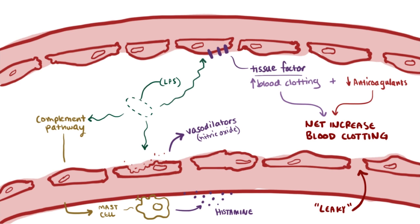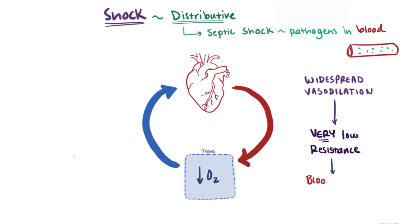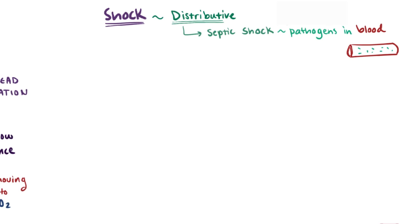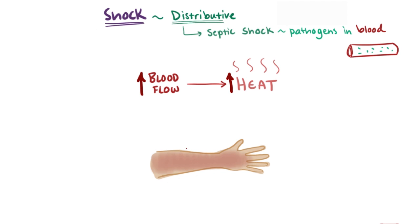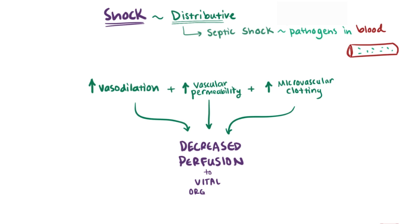Clotting and blockages in blood vessels further decrease perfusion. This widespread vasodilation means very little vascular resistance, and blood can't unload as much oxygen as it moves through the vasculature, returning to the right side of the heart with leftover oxygen. So unlike cardiogenic and hypovolemic shock, MVO2 can be normal or even increased. With increased flow in peripheral vessels, the skin becomes warm and flushed, making distributive shock a warm shock. The combined effects of widespread vasodilation, increased vascular permeability, and microvascular clotting all contribute to decreased perfusion of vital organs.